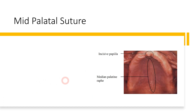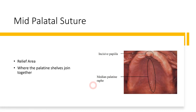Moving on to the second relief area in the maxilla, which is called the mid-palatal suture. As you can see in this clinical picture, this is the area where the two palatine shelves join together, forming the mid-palatal suture — it's just a slight elevation that you can also feel in your mouth. This is a significant structure because, since it's slightly elevated, if relief is not provided during dental impression, it can lead to dislodging of the denture. The mid-palatal suture can sometimes be a bit mobile or firm, which can lead to rocking of the denture, so relief should be provided.